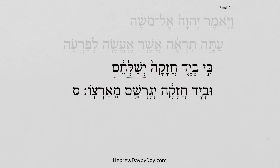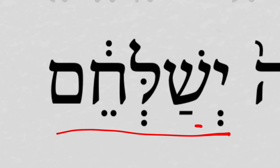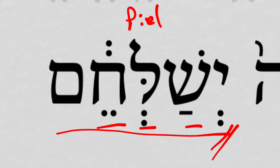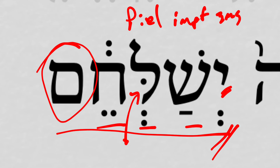Yishalachem. Now we have all three root letters showing here: shin, lamed, chet — meaning 'to send.' We notice by the shva under the prefix pronoun, this is a piel — that's a surefire sign. We also have the secondary marker of a dagesh in the middle root letter. The prefix pronoun marks this as an imperfect, 3rd masculine singular. And then we also have the attached pronominal suffix, 3rd masculine plural. So that is: 'he will send out them.'